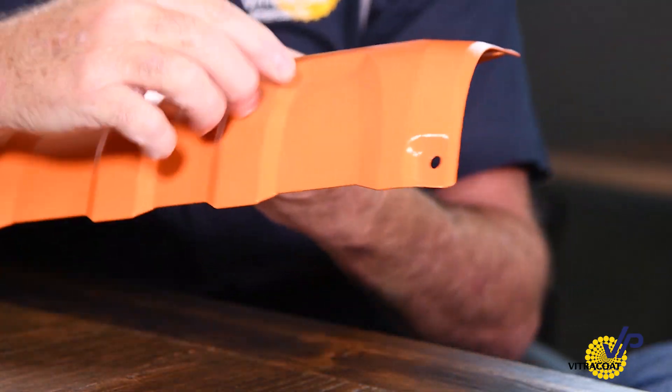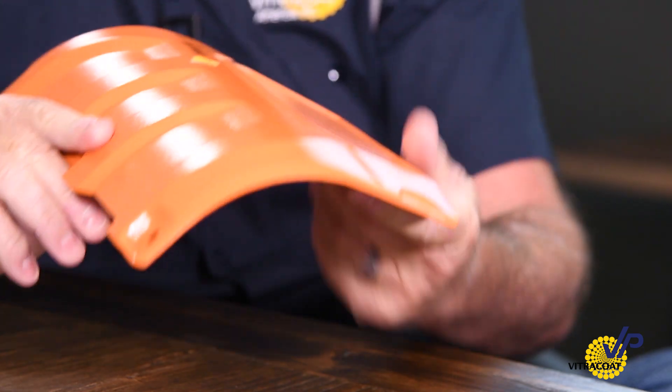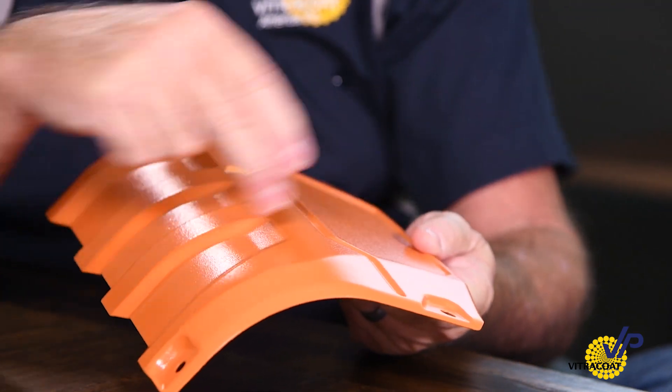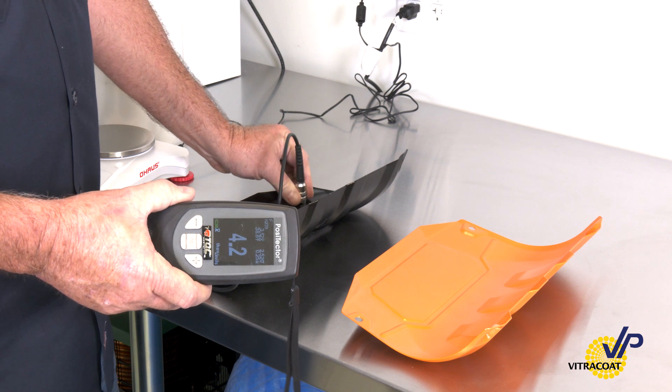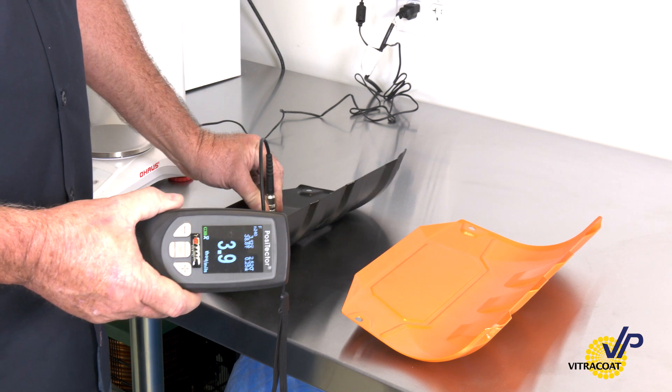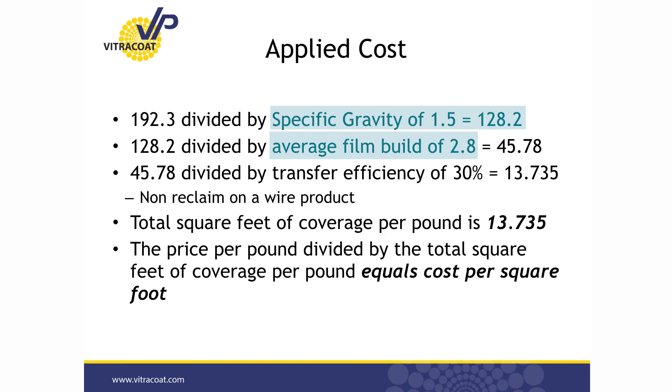The second thing is average film build. When you think about average film build, you're talking about taking a part and measuring the film build all over that part — not just in a couple of areas, but a variety of different areas. This is a good illustration because it has high points, low areas, and some Faraday areas. I would measure eight to ten times on this surface and, knowing that the backside must be coated as well, measure the same number on the backside and take an average. Let's say in this case my average was 2.8 mils.